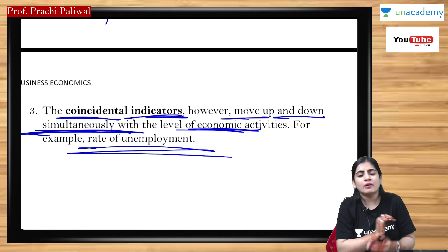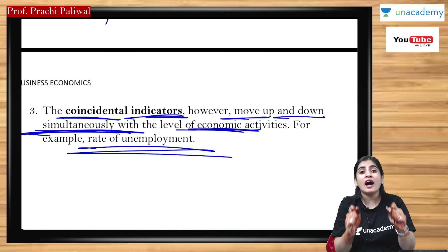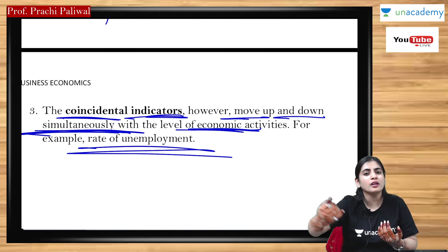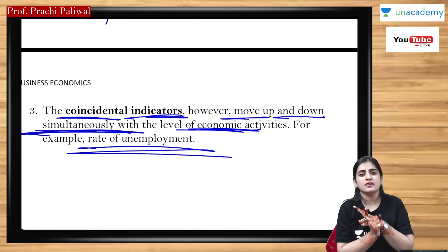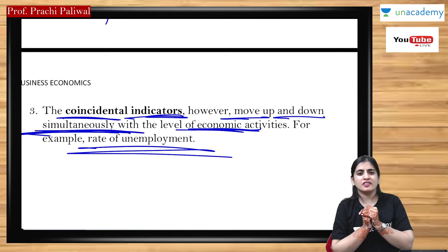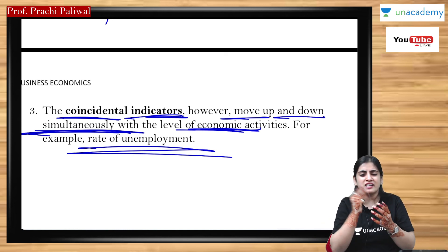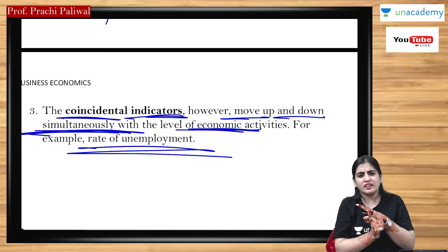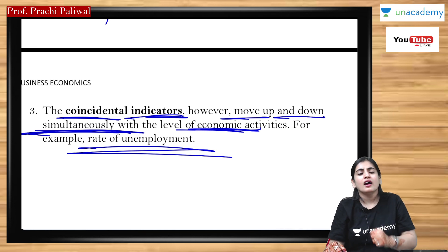Here we have completed the methods of demand forecasting and the chapter on demand. What we studied: meaning, usefulness, demand distinctions, levels, and methods — survey of buyer intention, collective opinion, expert opinion, statistical method (trend projection, fitting trend, graphical, regression), controlled experiment, and barometric method.